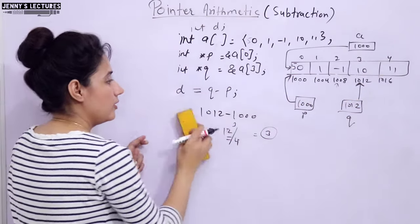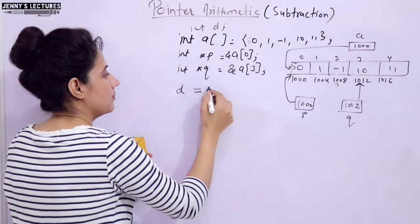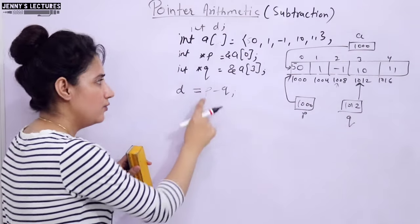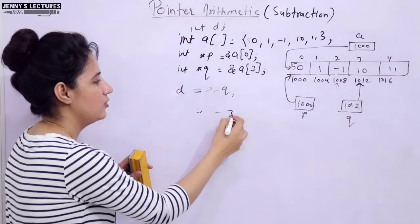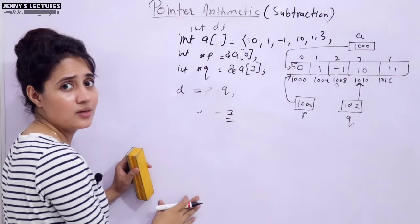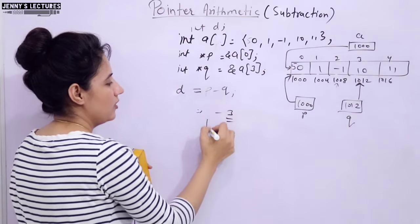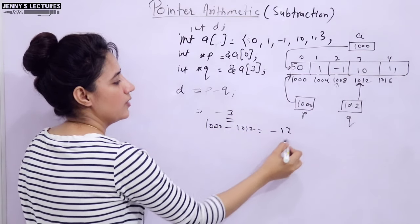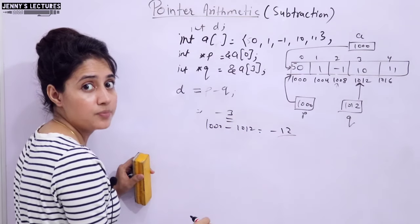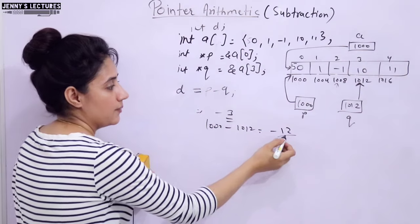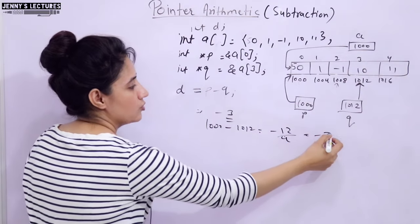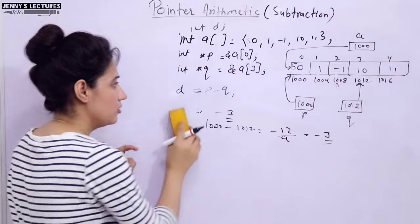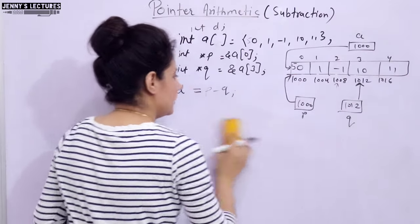You can also do P minus Q, which gives minus 3. P is 1000 minus 1012, that is minus 12, divided by size of the data type 4, giving minus 3. So that is the difference — this is how you find the difference between two pointer variables.